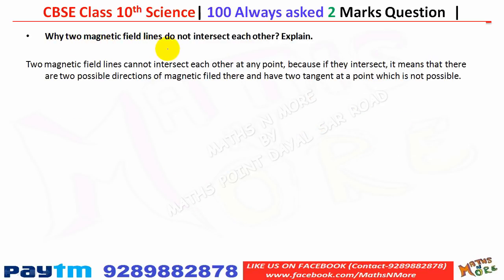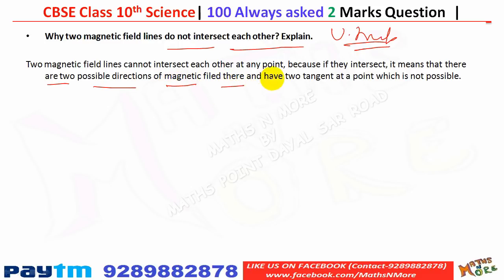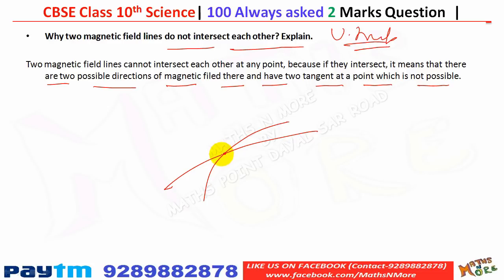Two magnetic field lines cannot intersect each other at any point because if they did, it would mean there are two possible directions of the magnetic field at that point — i.e., two tangents at one point — which is not possible. At any single point, only one tangent can be drawn, so intersection of magnetic field lines is impossible.